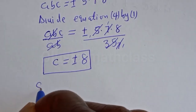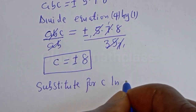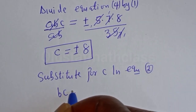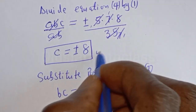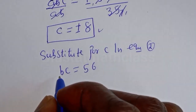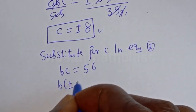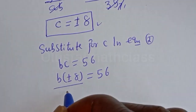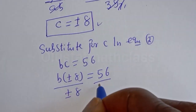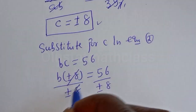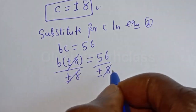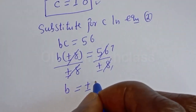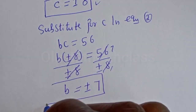Now let's substitute for C in equation 2. Equation 2 is BC equal to 56, and C is equal to plus or minus 8. Then B times (plus or minus 8) is equal to 56. Let's divide both sides by plus or minus 8. The 8 cancels, giving B is equal to plus or minus 7. This is the value of B.